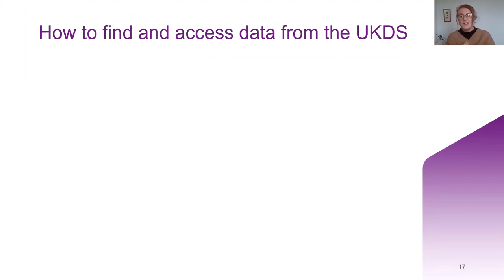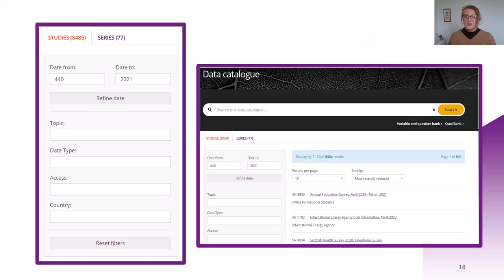I'm now going to quickly cover how you can find these datasets on our website, how you can search for them, and how you can go about accessing them. The first place you can search for data is our catalogue search tool, which allows you to search the 7,300-plus datasets available from the UK Data Service. You can enter relevant search terms or the name of a particular dataset into the search bar, and you can also search by study number. You can also use the filters on the left-hand side to refine your search by topic, data type — for example teaching data — access type such as open data, and also country.